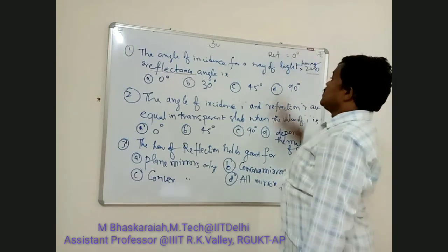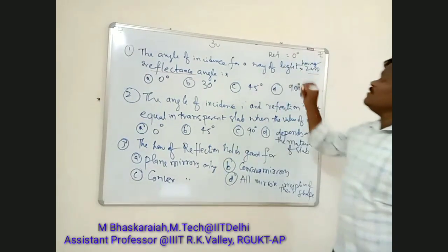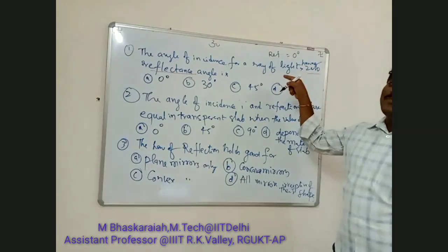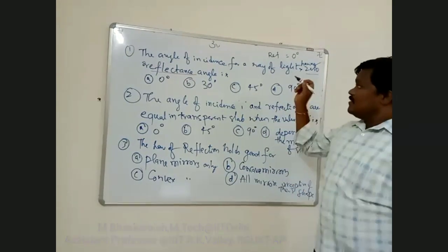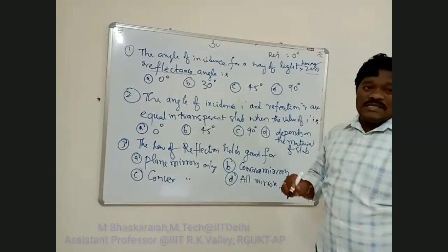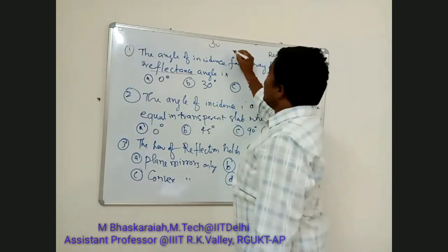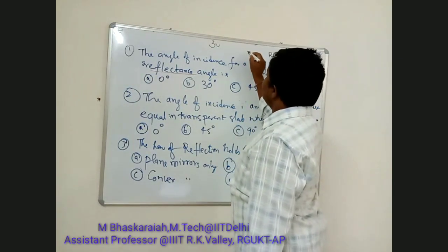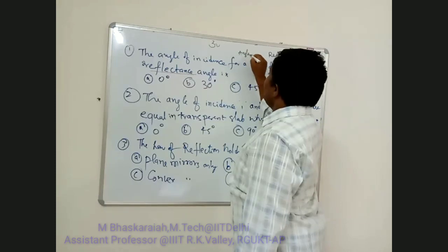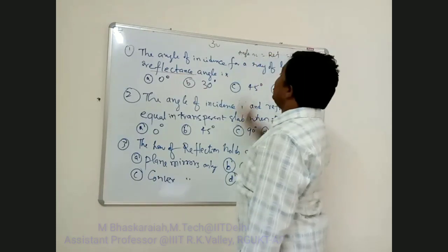The angle of incidence is 0 degrees. By the law of reflection — the first law of reflection — the angle of incidence is equal to the angle of reflection.